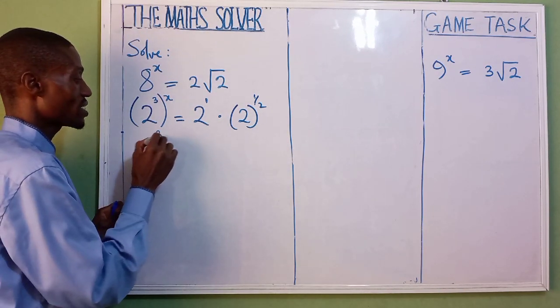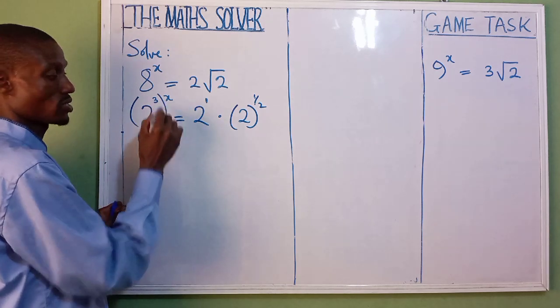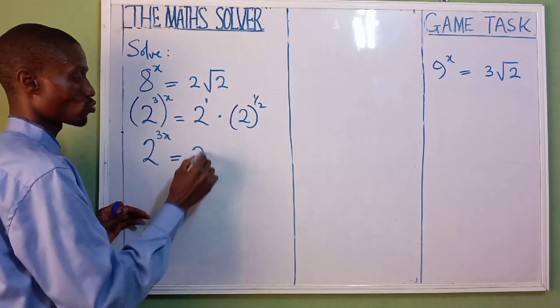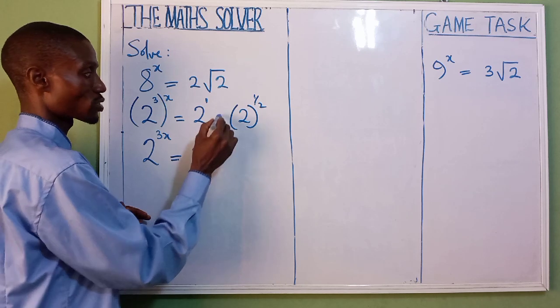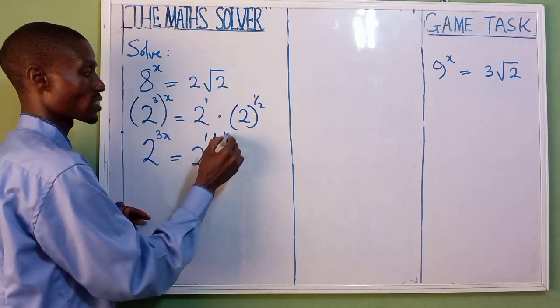You now have 2 raised power of 3x, by the time we apply this, equal to 2 raised power of 1, plus 1 over 2.